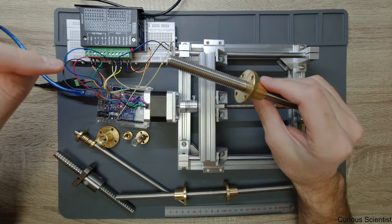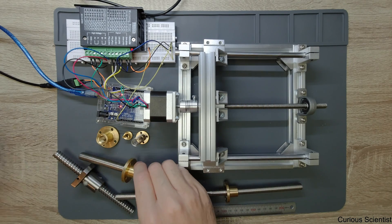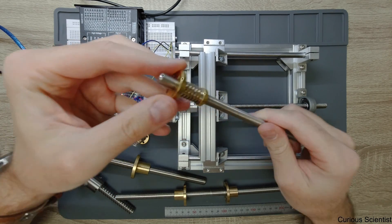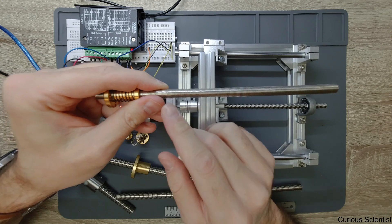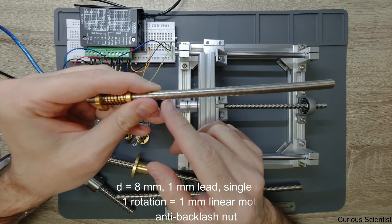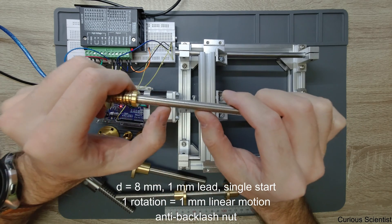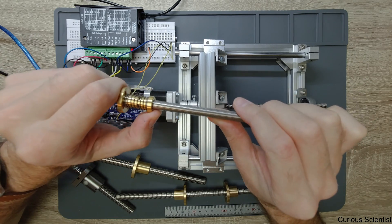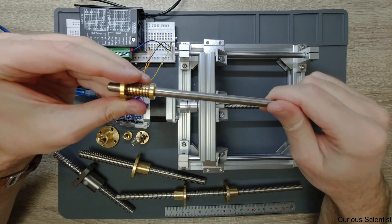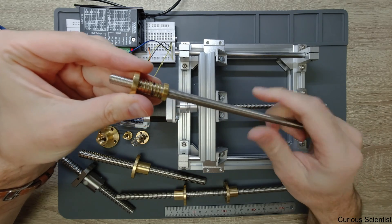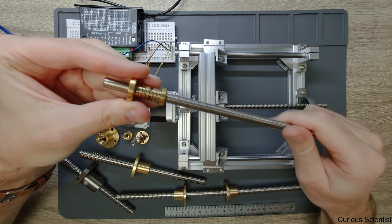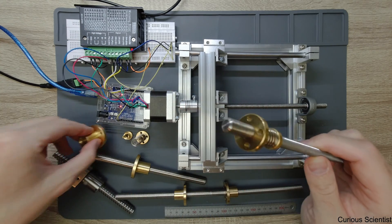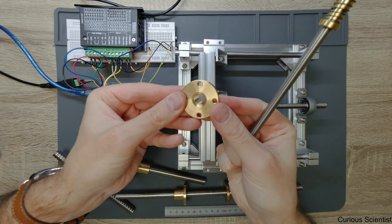But then you can have single start again, but this is one millimeter. So the distance between the two threads is a bit less, it's half of the previous one basically. And then this is a special nut. The previous one was this brass nut.